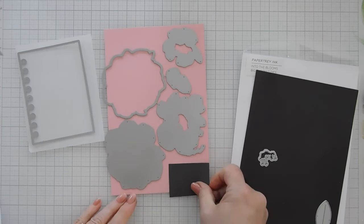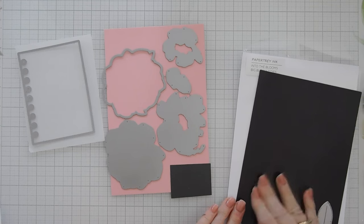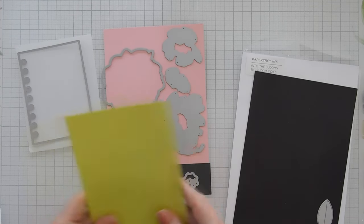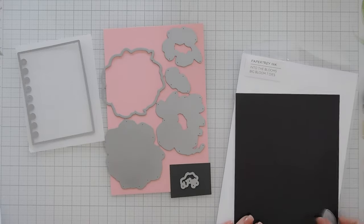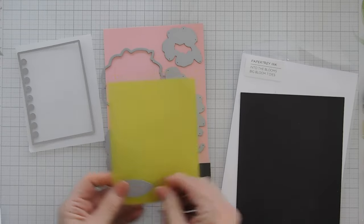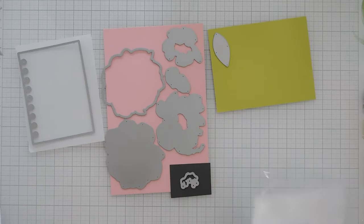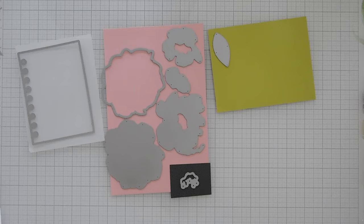For the flower stamen I'm going to use Paper Tray Inks Smoky Shadow cardstock and then for the leaf we're going to die cut this out three times. I'm using Limeade Ice. I'm going to run everything through my die cut machine and I will be right back.